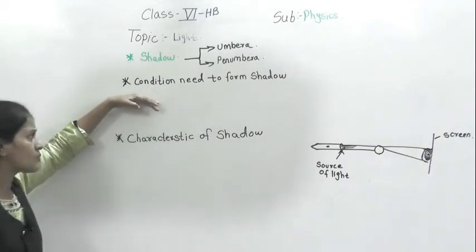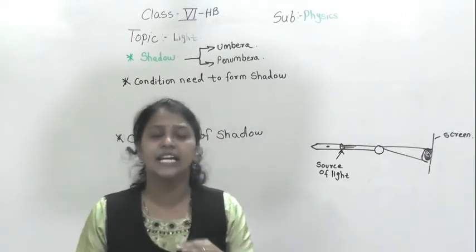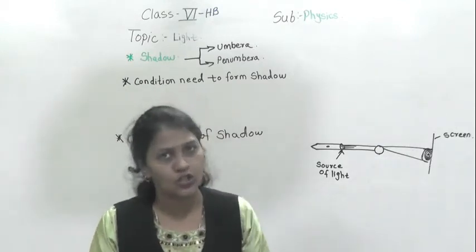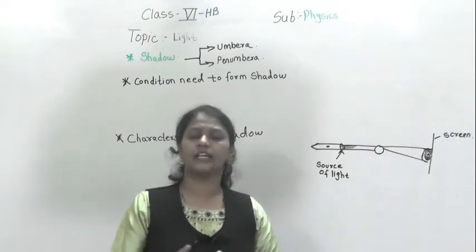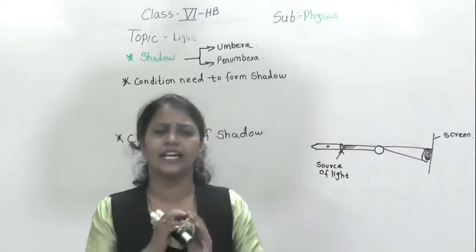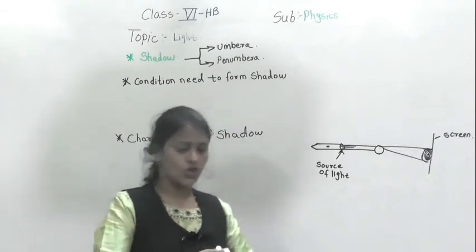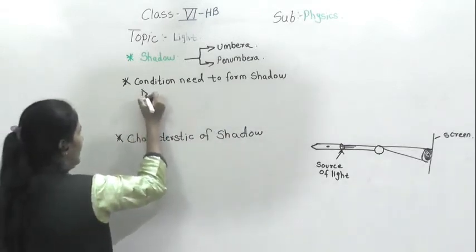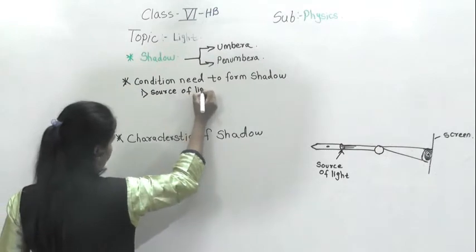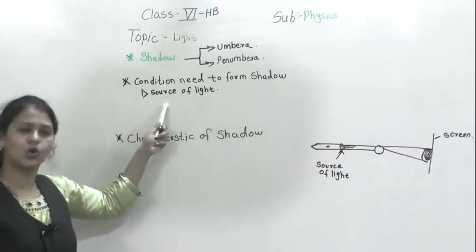The next point is the conditions needed to form a shadow. The first condition is that you need a source of light. If light is not there, no opaque object can cast a shadow — it is not possible. So the important first condition is that we need a source of light.